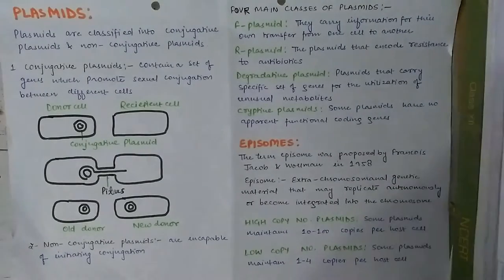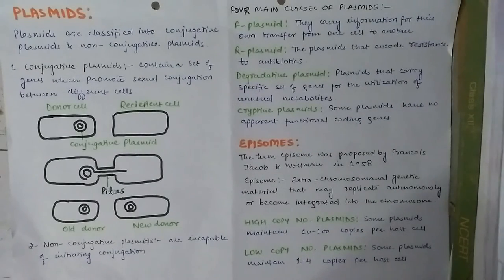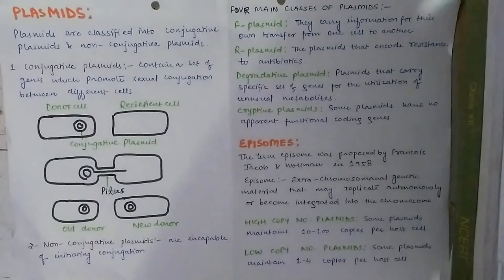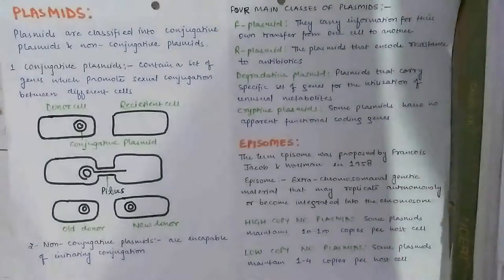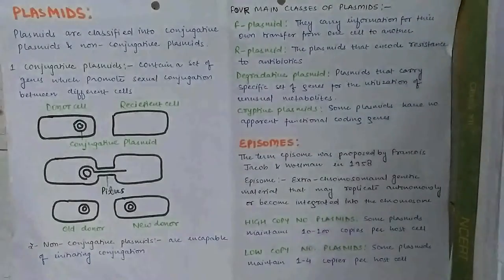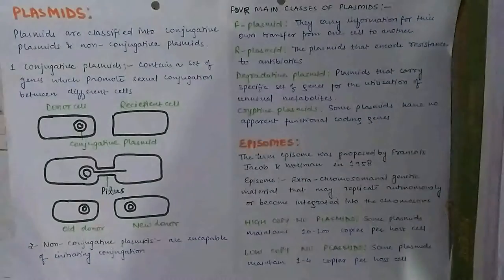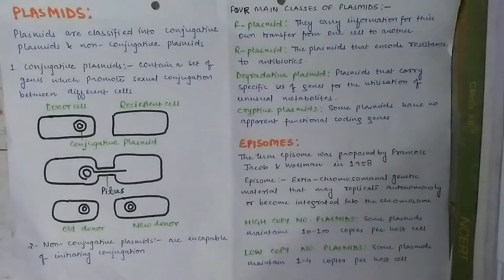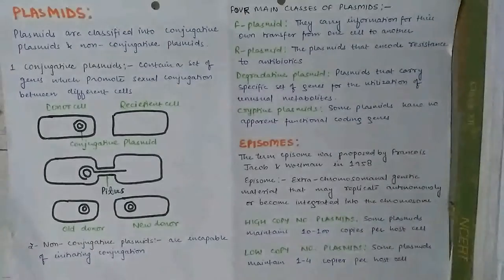A plasmid can be introduced into a bacterium through a process known as transformation. After transformation, bacteria start dividing rapidly and can be used as factories to copy DNA fragments in large quantities.